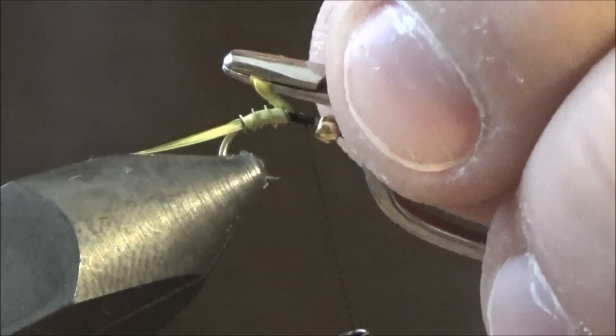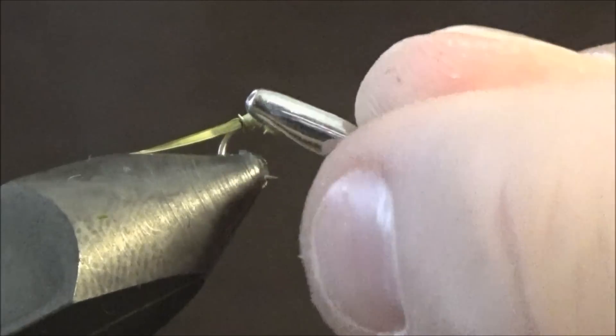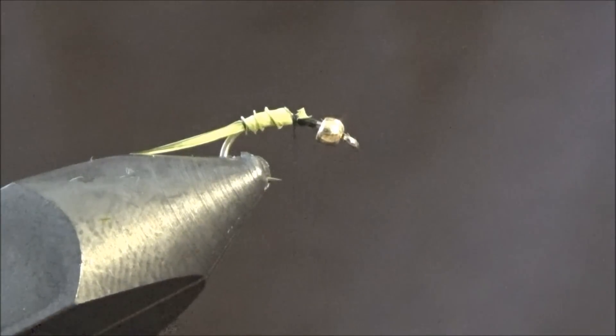Just going to space them out pretty good, evenly. A couple wraps should do, and then you secure it down. Clip off the biot, secure everything down.